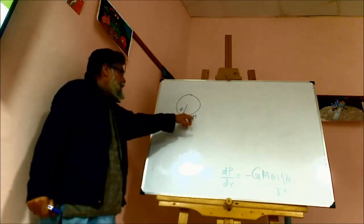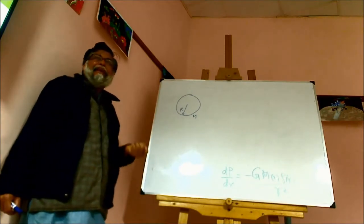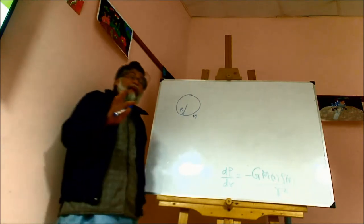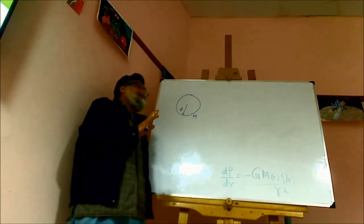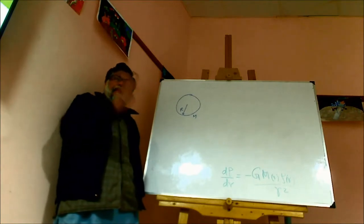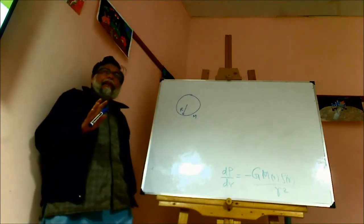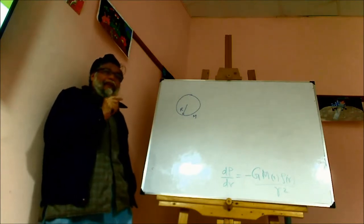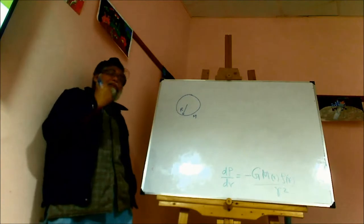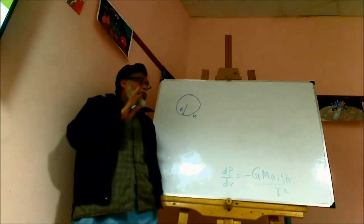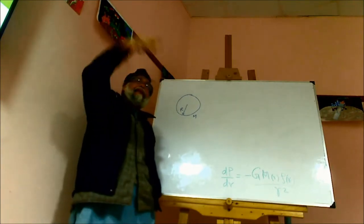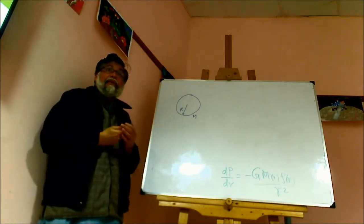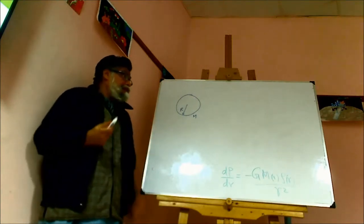If you have mass M and radius R, the mean molecular weight of this object is mu. Stars are largely made of hydrogen. In the universe, 75% by weight is hydrogen, 24% is helium, and 1% is other elements. So hydrogen is already 75% by weight.